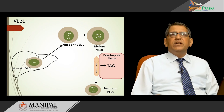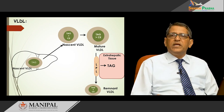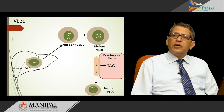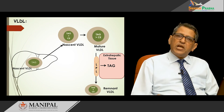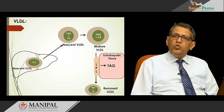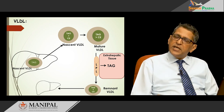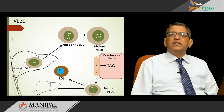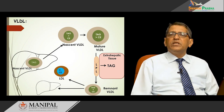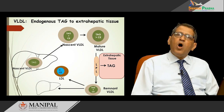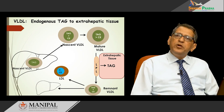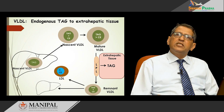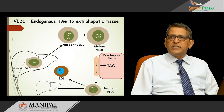The remnant VLDL is smaller in size, has more density, and lower triacylglycerol concentration compared to mature VLDL. Remnant VLDL or IDL has two fates: it is taken up by the liver for further metabolism, or it is converted to LDL in the blood. The function of VLDL is to transport endogenous triacylglycerol synthesized in the liver to extrahepatic tissues.